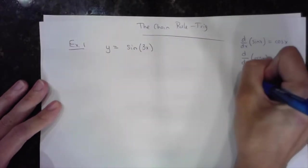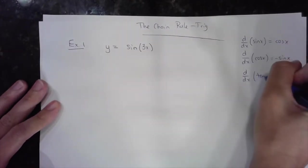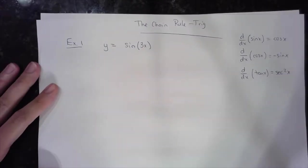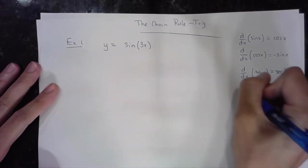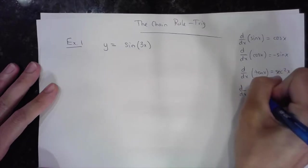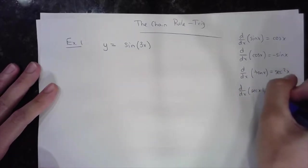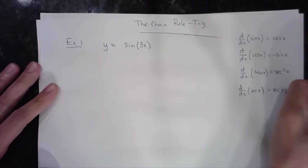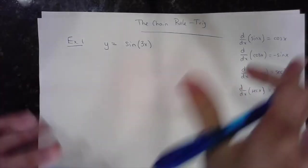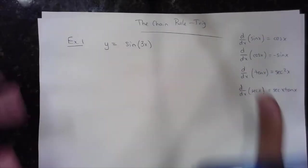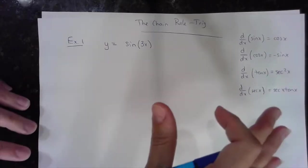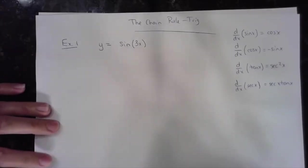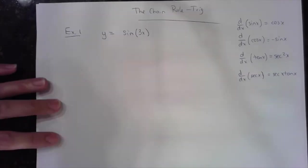The derivative of tangent is equal to secant squared. The derivative of secant is just secant tangent. There are a couple more, but I'll just use those for now. These have to be memorized — write them down and rewrite them so that you know them.